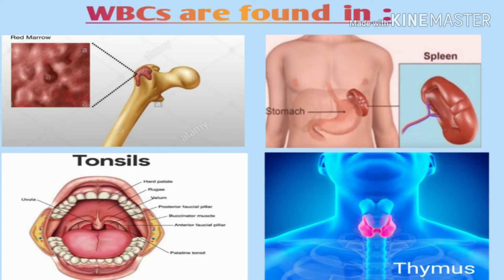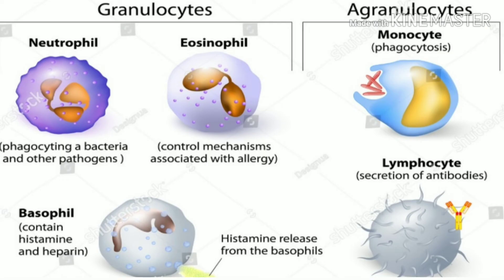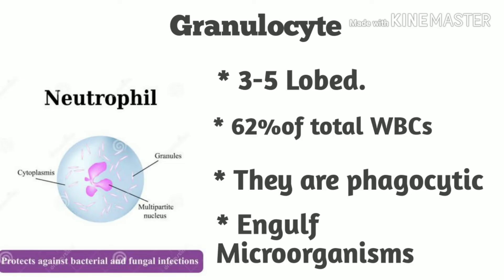White blood cells are found in red bone marrow, spleen, tonsils, and thymus, and are mostly found in red bone marrow. White blood cells can be further divided into two types: granulocytes and agranulocytes. Granulocytes include neutrophils, eosinophils, and basophils, while agranulocytes include monocytes and lymphocytes.